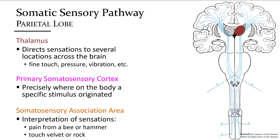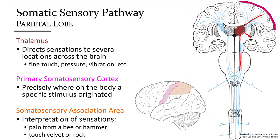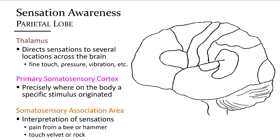Sensory input arrives at the thalamus where it is directed to the primary somatosensory cortex, as well as the basal ganglia, cerebellum, and other regions. The somatosensory association area then makes sense of the incoming information by interpreting the various sensations. Within the parietal lobe, just posterior to the central sulcus, is the primary somatosensory cortex directly receiving body sensations, while the somatosensory association area interprets these signals.